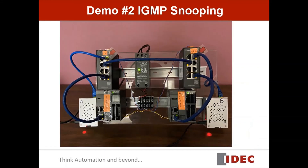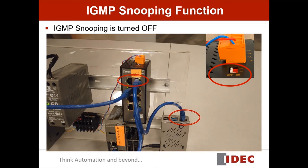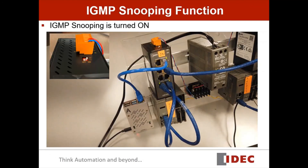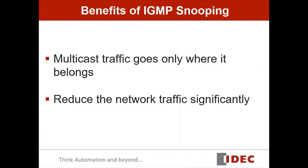Let's look at the actual unit to see the difference between IGMP Snooping off and on. If IGMP Snooping is off, the port connected to the Raspberry Pi LED is flashing because data is being sent to the Raspberry Pi B. If IGMP Snooping is turned on, the port connected to the Raspberry Pi A LED is not flashing because no data is being sent to Raspberry Pi A. The benefit of this function is that multicast traffic goes only where it belongs, which reduces network traffic significantly.